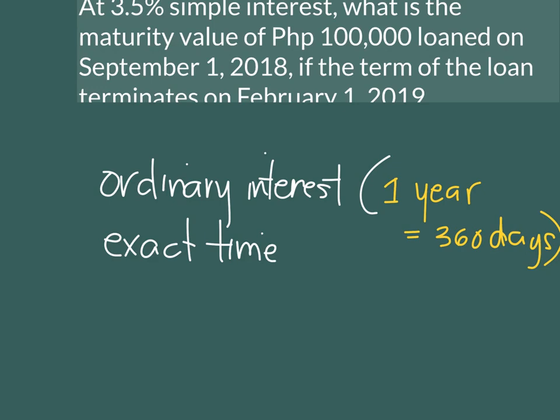The exact time means you have to count from the time the loan was taken up to the exact time the loan will terminate, or if it is an investment, at the end of the investment. We have the exact time — if it says in terms of days, we really have to count the exact number of days from the initial date to the final date.